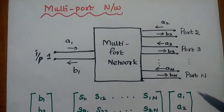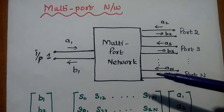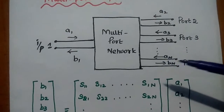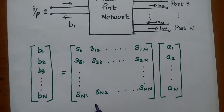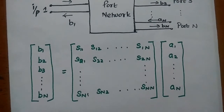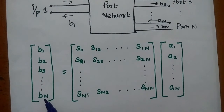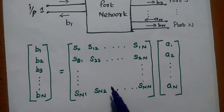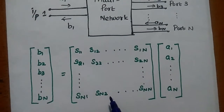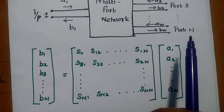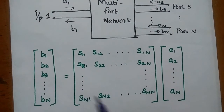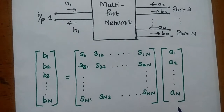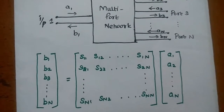For a multi-port network with more than two ports (port 1, port 2, ... up to N), the S-matrix equation is: [B1; B2; B3; ...; Bn] = S_matrix × [A1; A2; ...; An]. The S-matrix is always a square matrix with dimensions based on the number of ports. This is the general representation for multi-port networks.